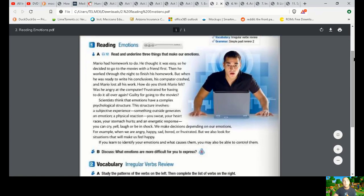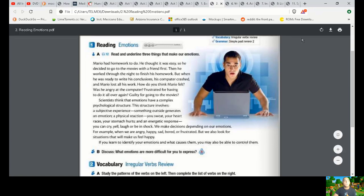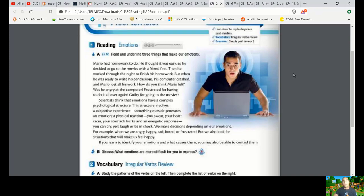Reading emotions. Read and underline three things that makes our emotions. So you're going to read this text. Once you figure out what makes our emotions, you're going to underline this. A subjective experience would be an emotion or something that makes our emotions. That'll be the first example.